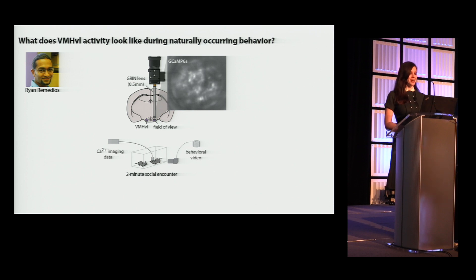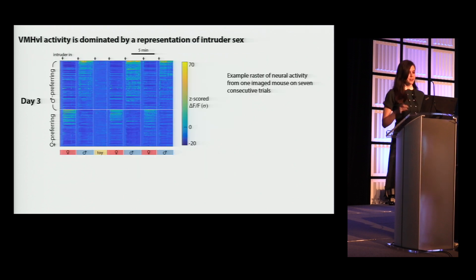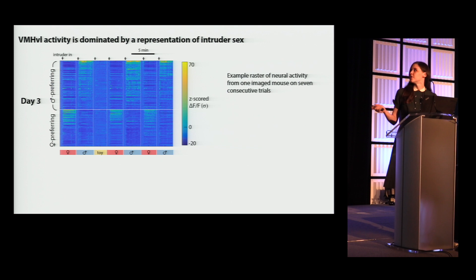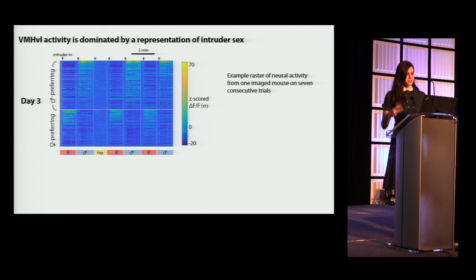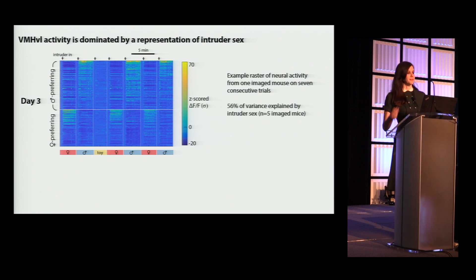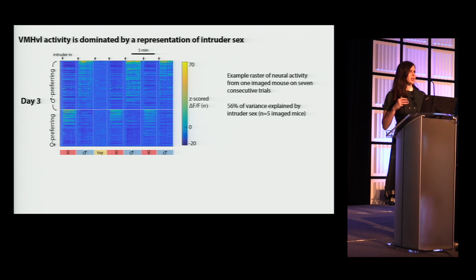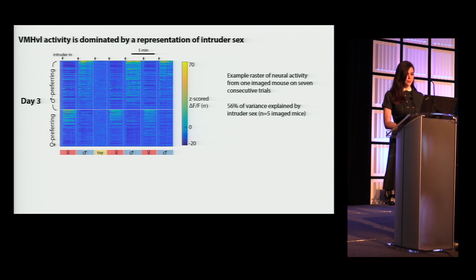I'll start with the dominant representation found at the end of the study. Looking at neural responses on day three, there is a very strong representation of the sex of the intruder. One population of neurons responds repeatedly in the presence of females, and a second population is repeatedly active in the presence of males. This representation of intruder sex accounts for a large proportion of variance in the imaged neurons. We can also decode specific behaviors — predicting when the animal will attack, sniff, or mount based on VMHVL activity.